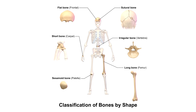In this video we're going to talk about the six main types of bone. We have long bones, short bones, flat bones, irregular bones, sesamoid bones and sutural bones. So let's start with the first one.